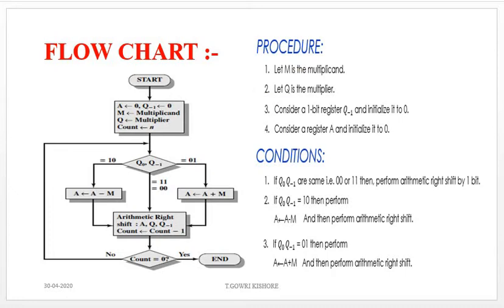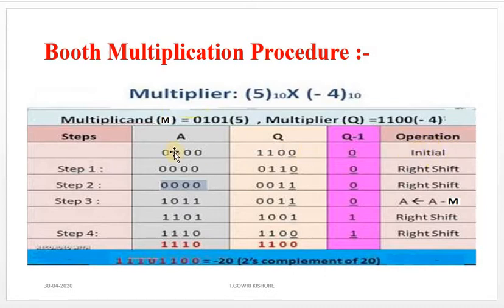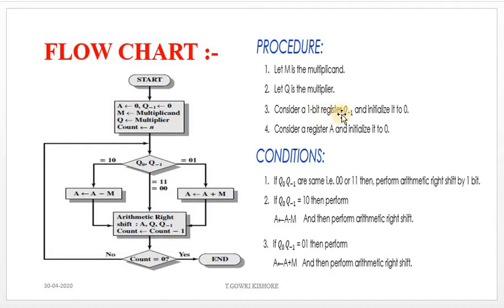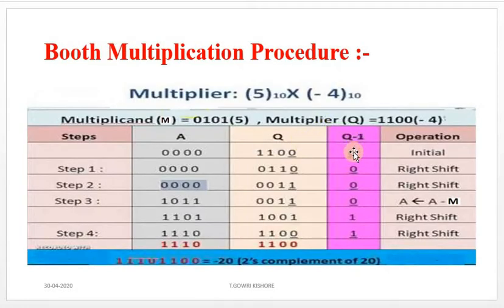As per the procedure, the accumulator A is initialized to 0000, since the bit size is 4. Q, the Multiplier, is 1100. Q minus 1, the 1-bit register, is initialized to 0. This is the initial state.